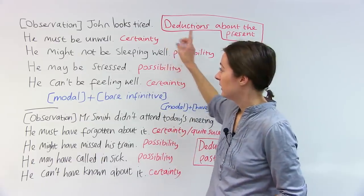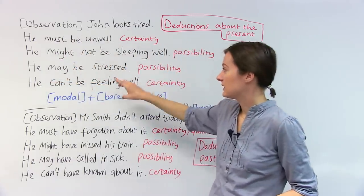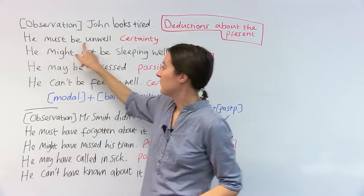So, for example, these are all different deductions you can make. You can say, he must be unwell.